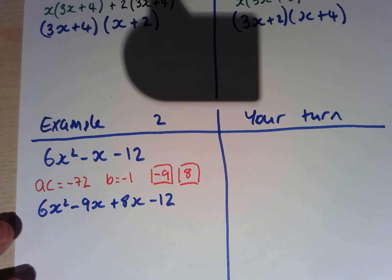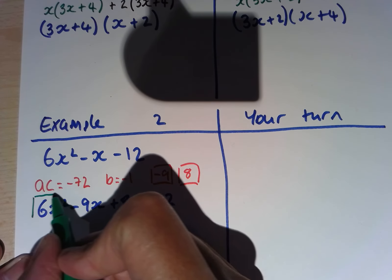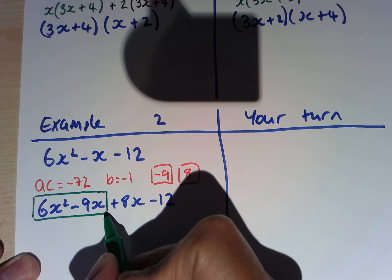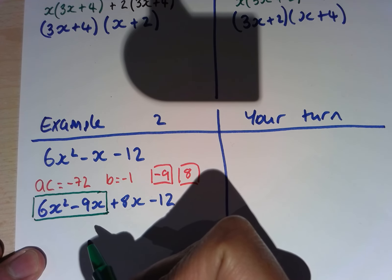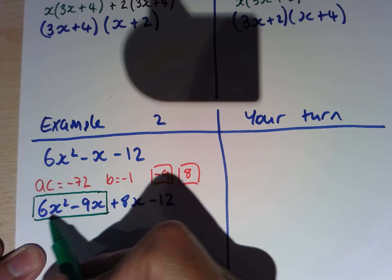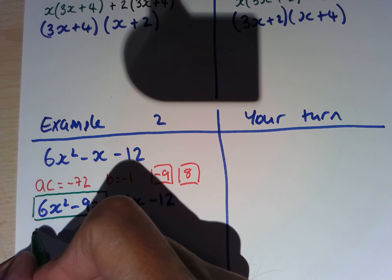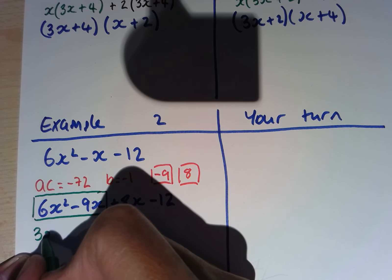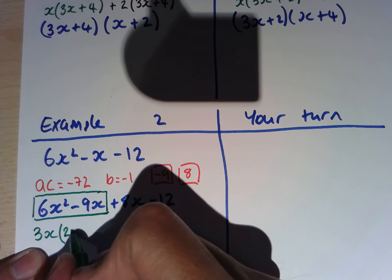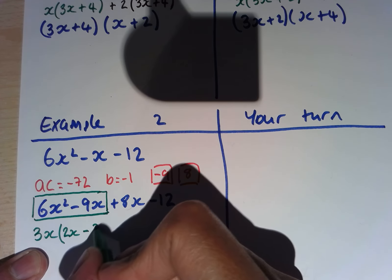We're going to concentrate on this part first: 6x squared take away 9x. If I factorise this, the highest common factor is going to be 3x, and inside my brackets I'm going to have 2x to give me 6x squared, take away 3.